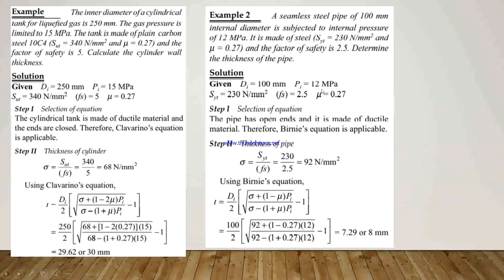In the first step, we select the equation. They are given a seamless steel pipe, which is an open-end pipe made of ductile material. So for open ends and ductile material, we select Birnie's equation. In the second step, we calculate thickness. Using sigma equals Syt divided by factor of safety, sigma equals 92 N/mm². Using Birnie's equation, we calculate the value of t as 8 mm.